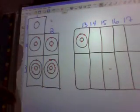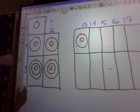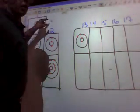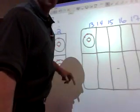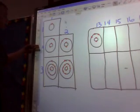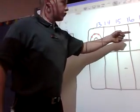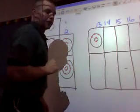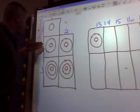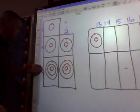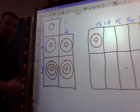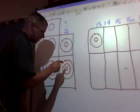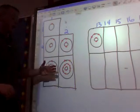Looking at this, the elements in period 1 — another name for period is rows — so everything in period 1 should have 1 ring or energy level. Everything in period 2 should have 2 energy levels. Let's count: 1, 2 — 2 energy levels for each element in period 2. Period 3 should have 3 energy levels: 1, 2, 3. And so on and so forth for each element in their respective periods.